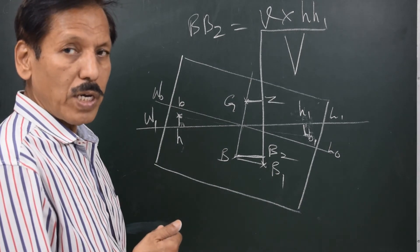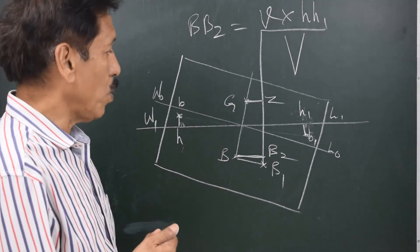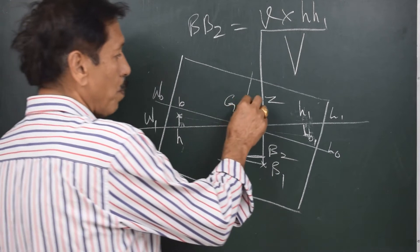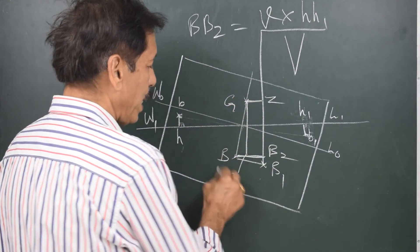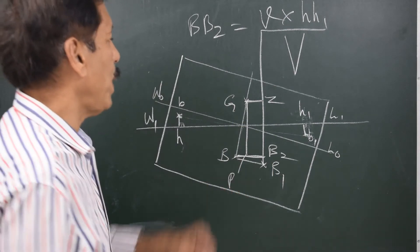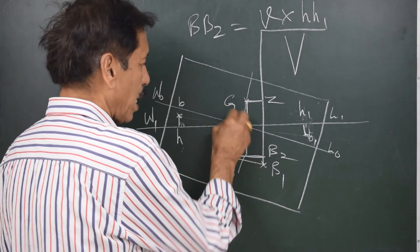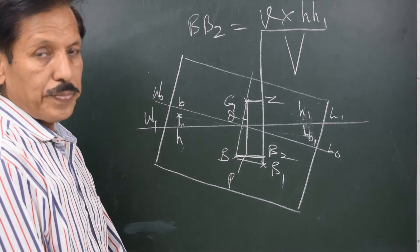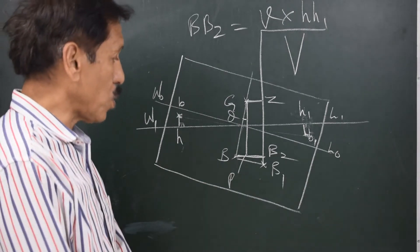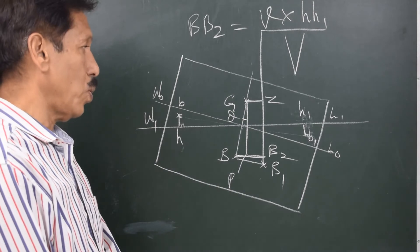The formula is similar to W into D upon displacement which everybody knows. If I drop a perpendicular from G on this line BB2 meeting at say P, then can I say BP, now this angle is theta, the inclination, can I say BP is equal to BG sin theta, opposite upon hypotenuse is sin theta. So can I say BP is equal to BG sin theta.